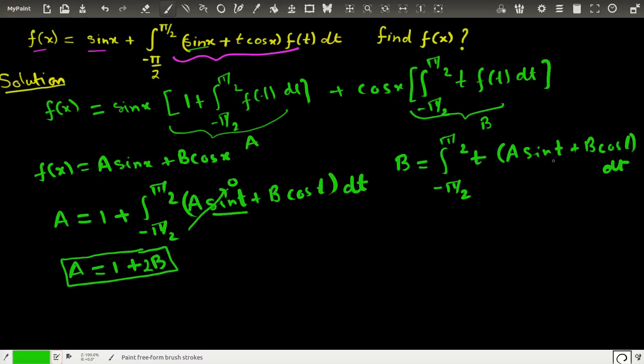Now remember, if I say f(x) is equal to x, this is an odd function; sin(x) is an odd function. Multiplication of two odd functions is an even function. On the other hand, cos(x) is an even function, but x is an odd function, so multiplication of this and this would give me an odd function. So this goes to zero in this case.